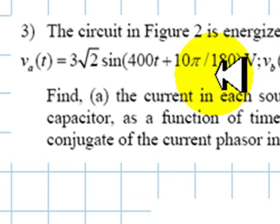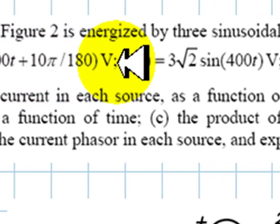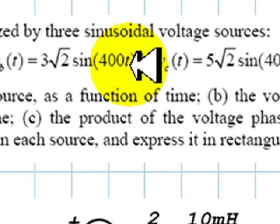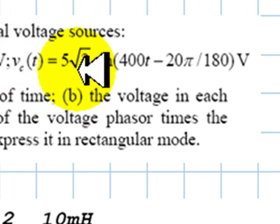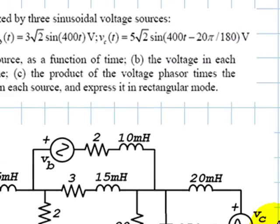Va is 3√2 sin(400t + 10°). Vb is 3√2 sin(400t + 0°). And Vc is 5√2 sin(400t - 20°).